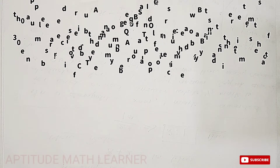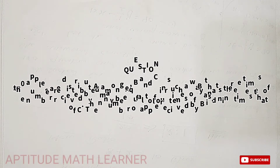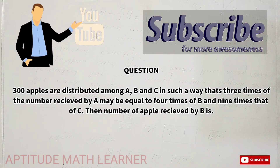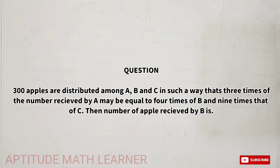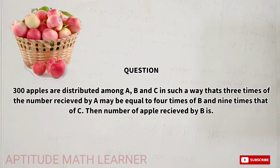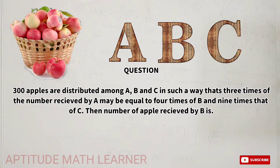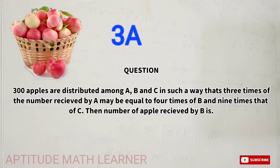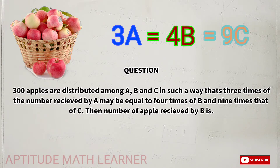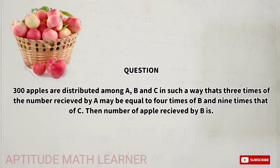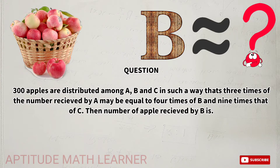Hello and welcome to my YouTube channel, Aptitude Math. For newcomers, please support the channel. The question today is: 300 apples are distributed among A, B, and C in such a way that three times the number received by A may be equal to four times of B and nine times of C.